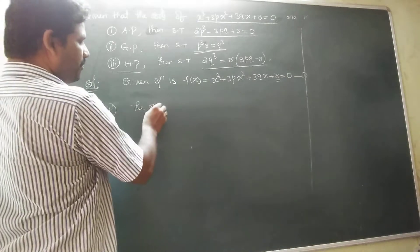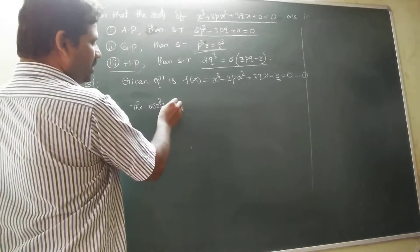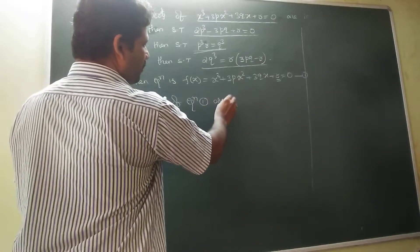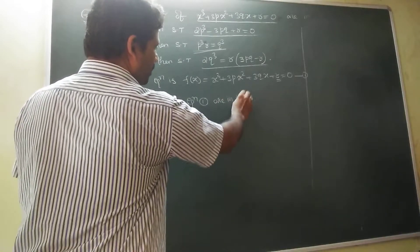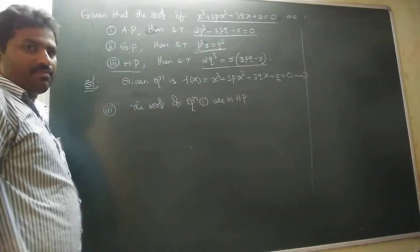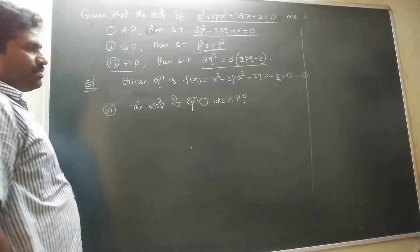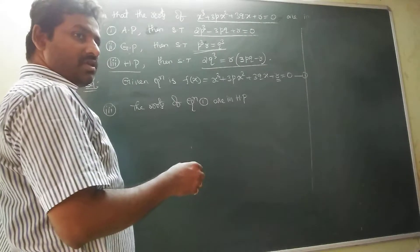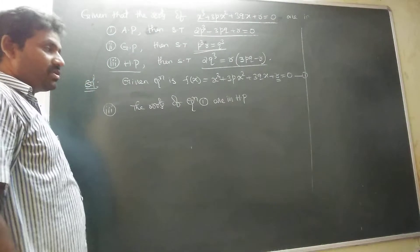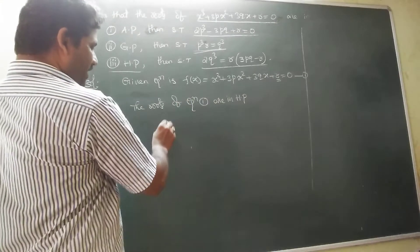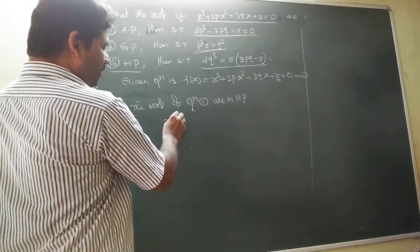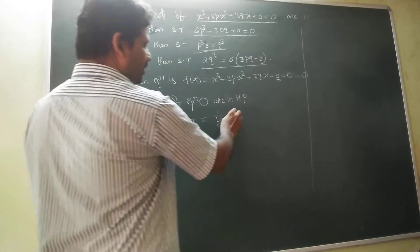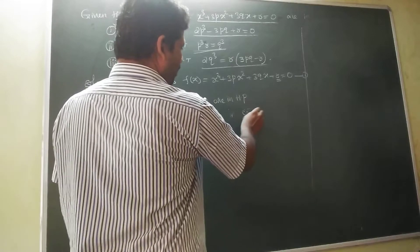The roots of equation 1 are in HP. So if the roots are in HP, then we have to convert them so that the roots are in AP. So put x equal to 1/y — substitute x equal to 1/y in equation 1.